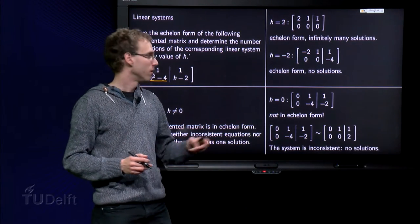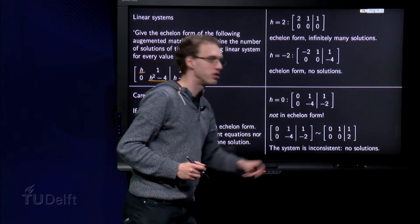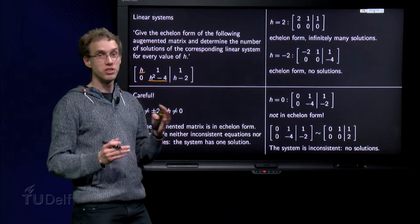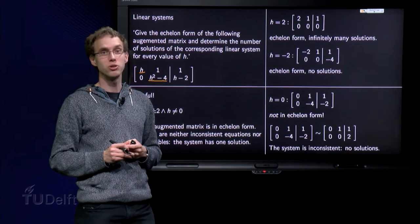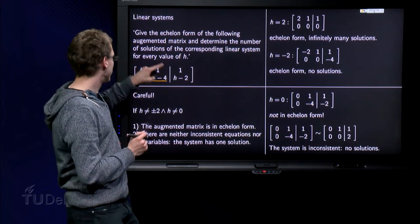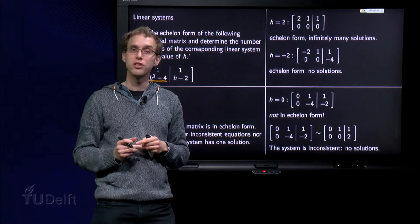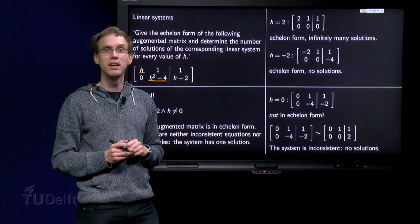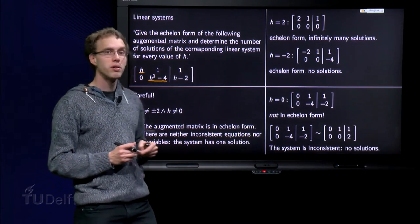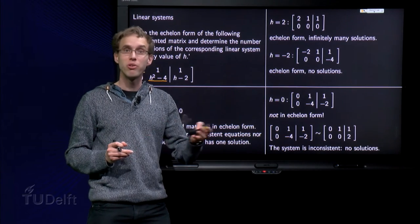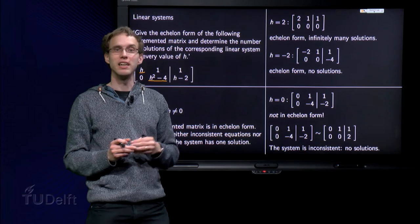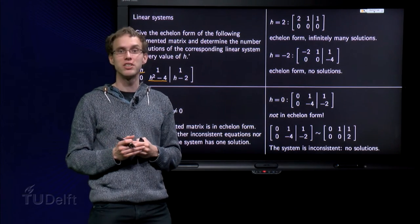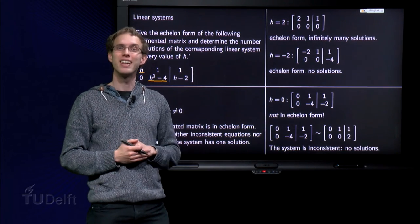And then you see, oh, but I have 0 times x1 plus 0 times x2 equals 2. So 0 equals 2. So in fact, the system is inconsistent and we have no solutions in this case. So, always if you have such an augmented matrix with a parameter, check where the pivots are, whether you still have pivots, and do all the special cases separately. Because then, in special cases, something special can arise.